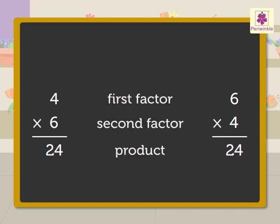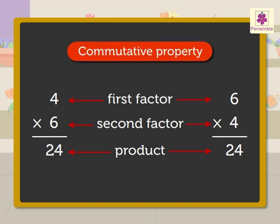So, we see that four into six is equal to twenty-four, and six into four is also equal to twenty-four. Thus, we know that even after changing the order of the factors, the product does not change. This property is also called commutative property.